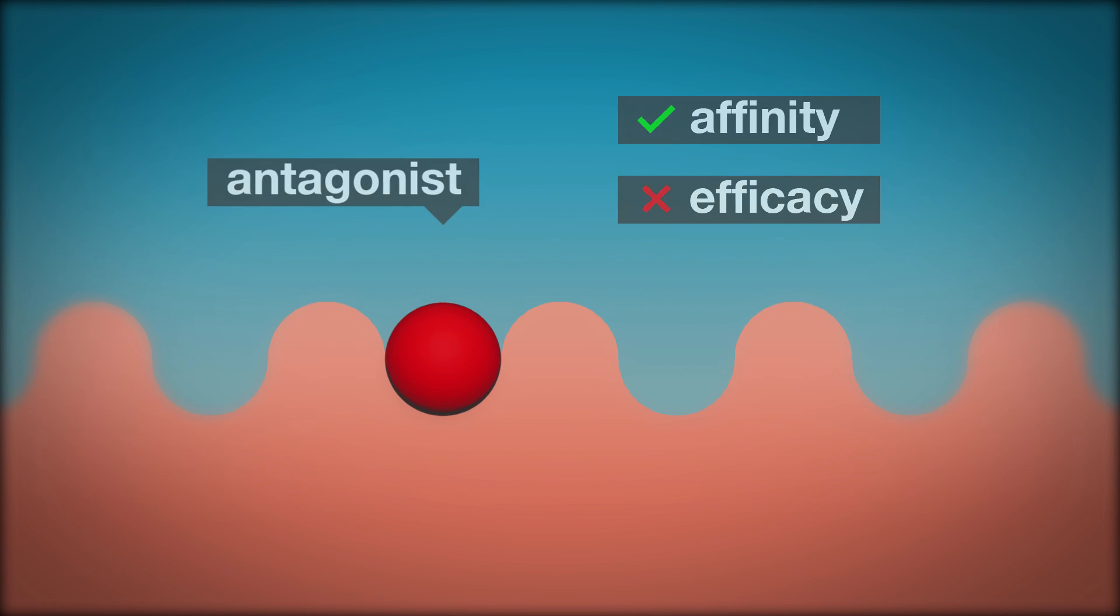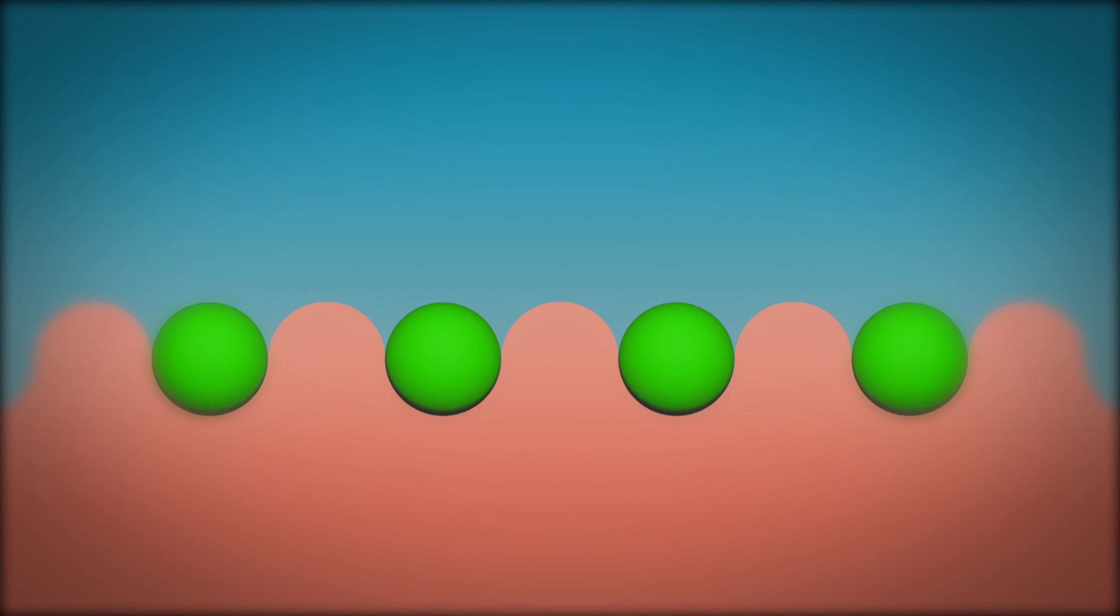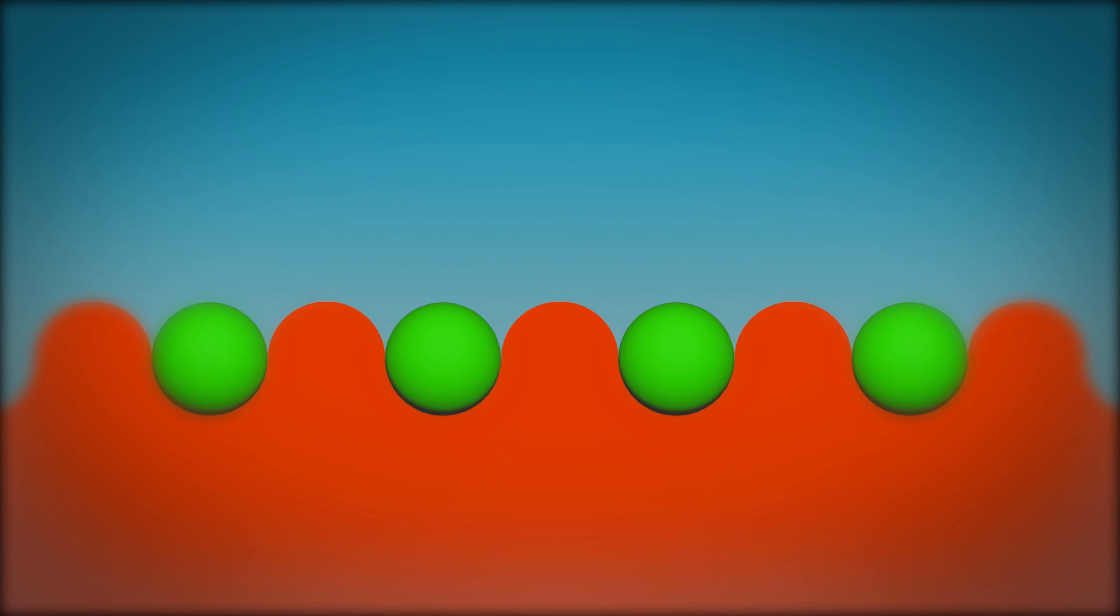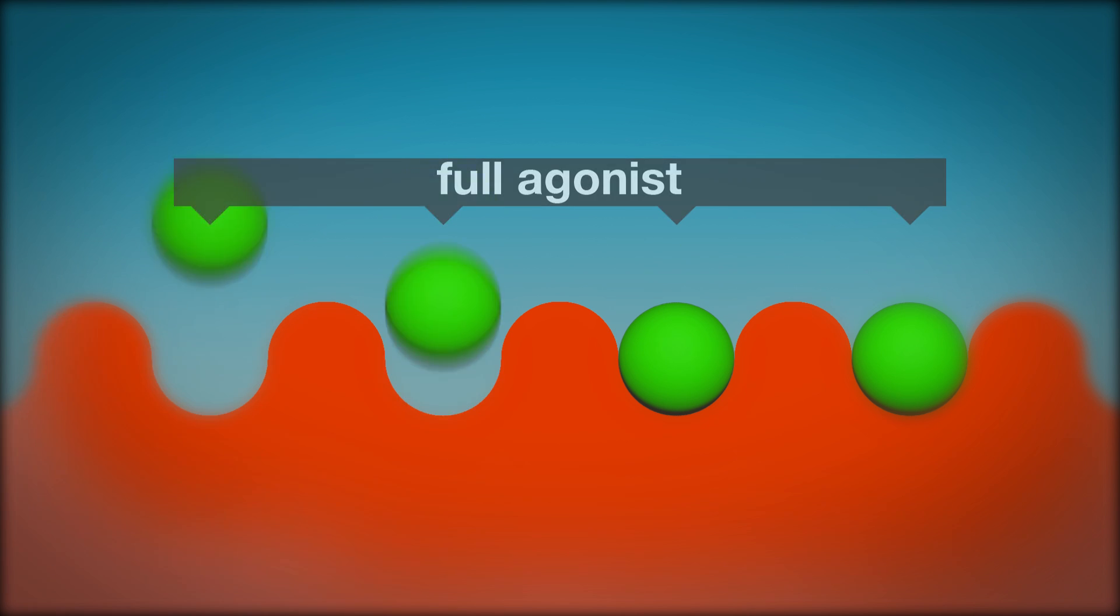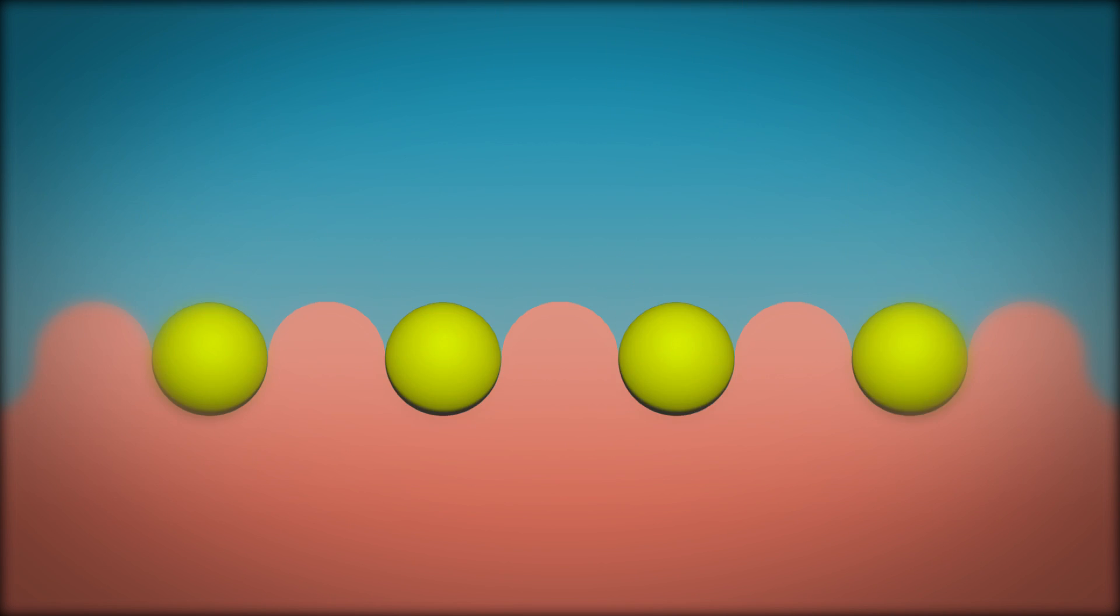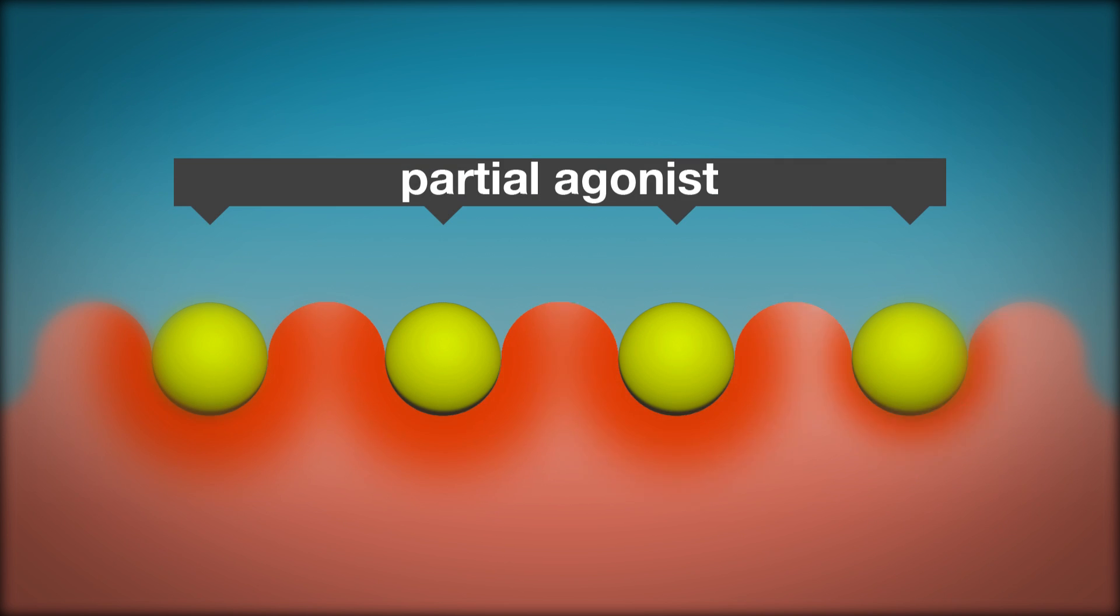The efficacy of an agonist can differ from one drug to another. Agonists that activate every receptor that it binds to are known as full agonists. Agonists that do not fully activate all the receptors to which they bind are known as partial agonists.